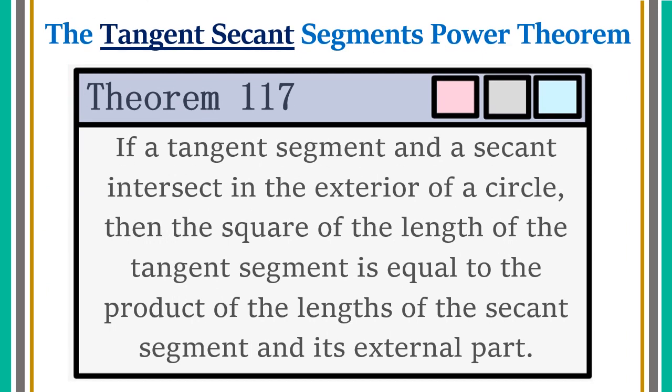First, what is theorem 117 or the tangent secant segments power theorem? If a tangent segment and a secant segment intersect in the exterior of a circle, then the square of the length of the tangent segment is equal to the product of the lengths of the secant segment and its external part.